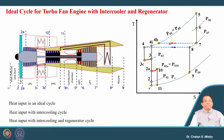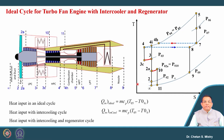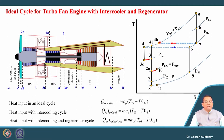Comparing the heat input: for the ideal cycle it is mCp·(T₀₅ − T₀₄ᵢ); with intercooling only it is mCp·(T₀₅ − T₀₄); and with intercooling and regeneration, the amount of heat supplied to the combustion chamber is lower. This means it is improving thermal efficiency. So thermal efficiency can be improved by increasing turbine entry temperature, by increasing overall pressure ratio, or by incorporating intercooler and regenerator.